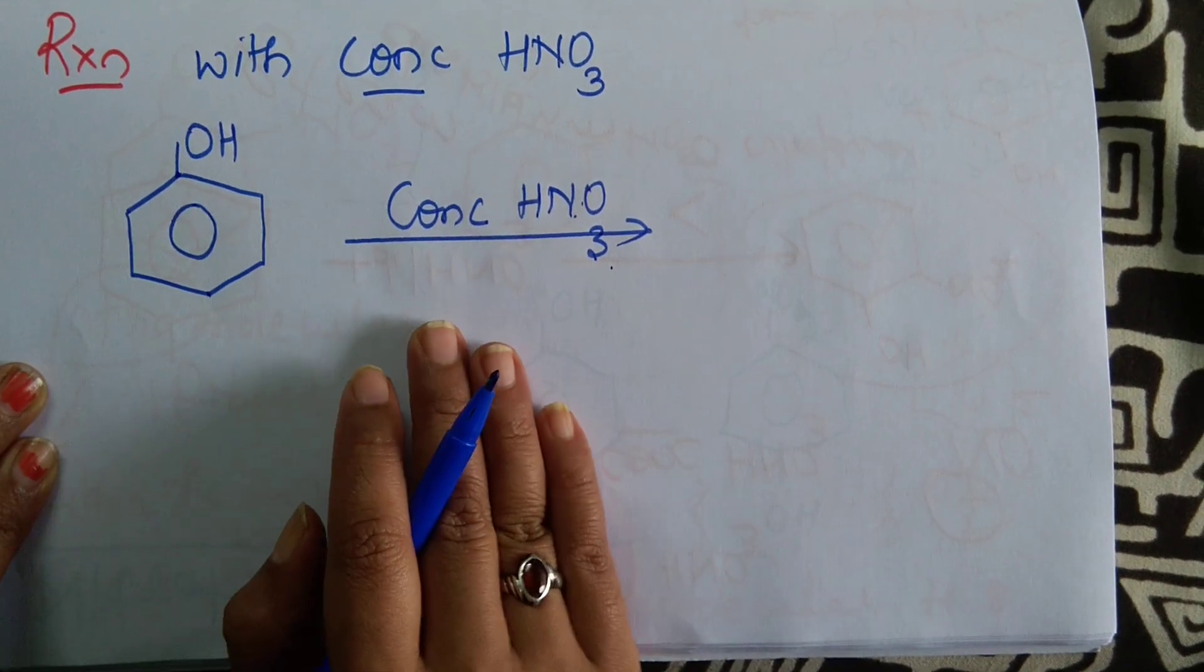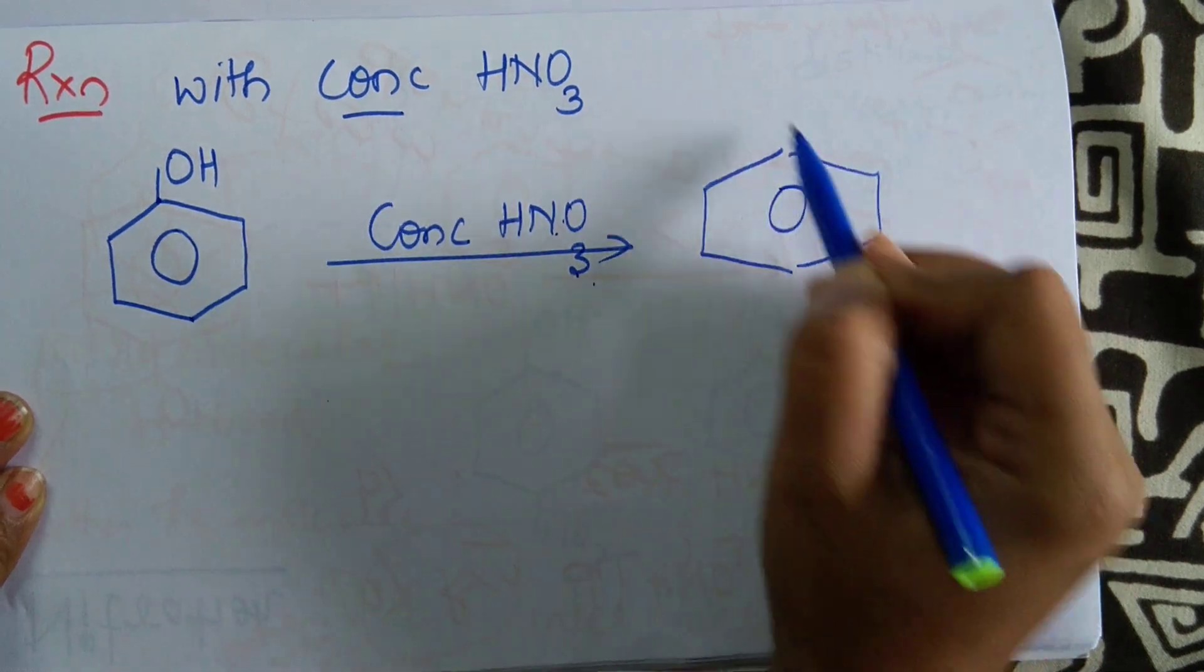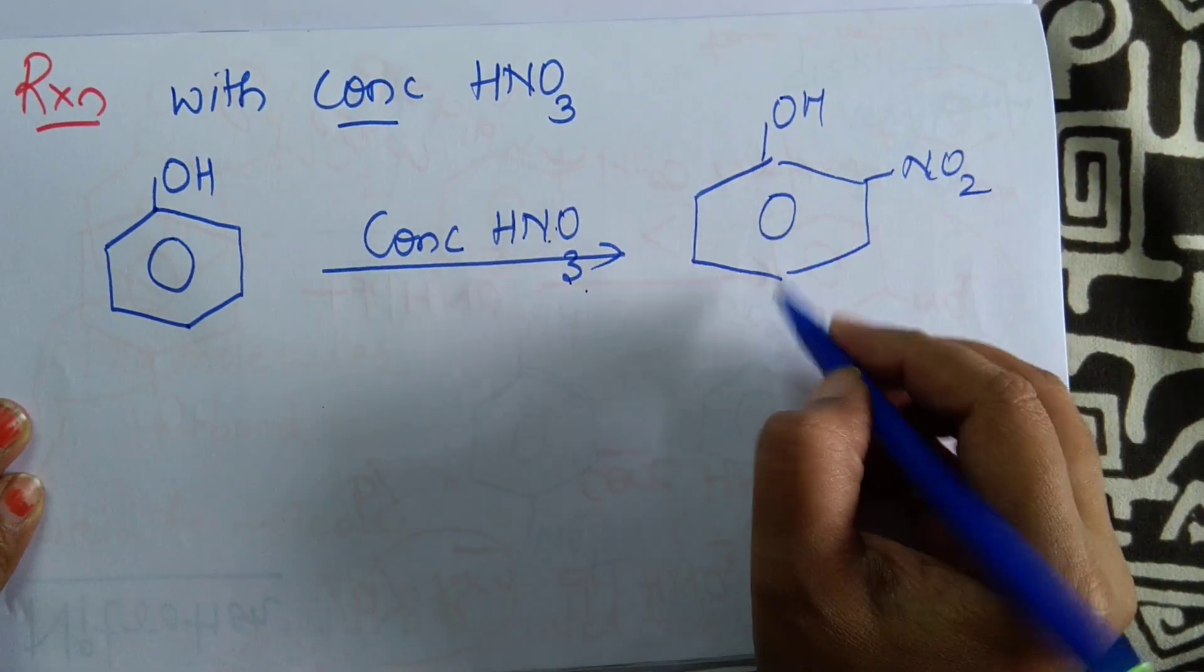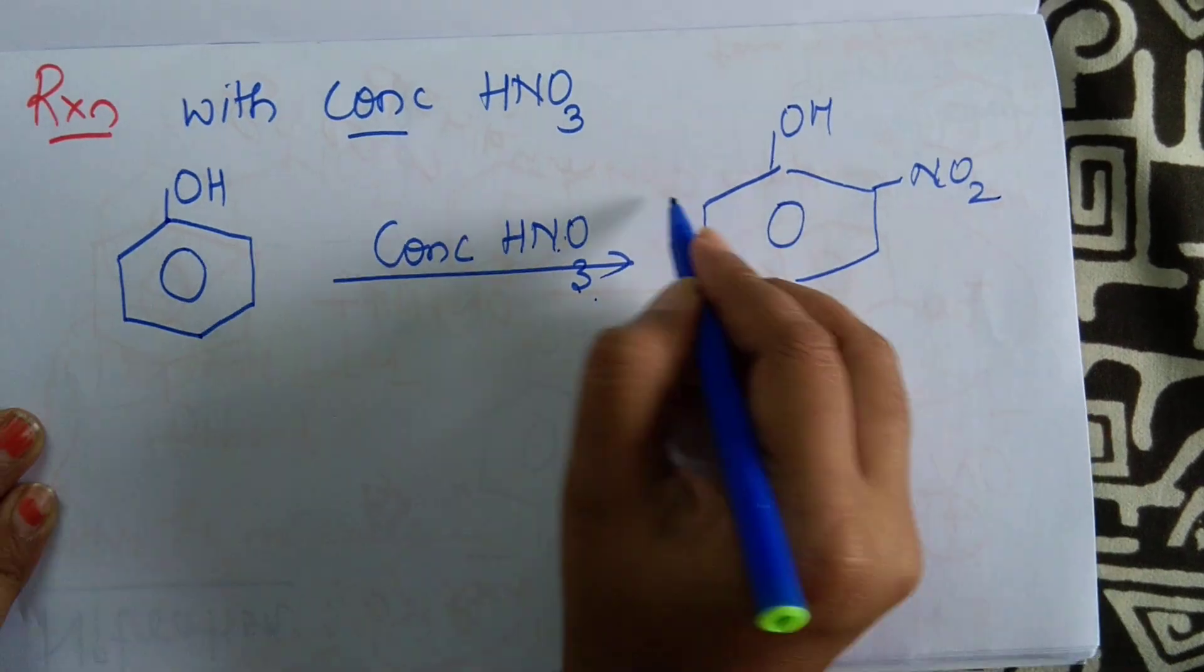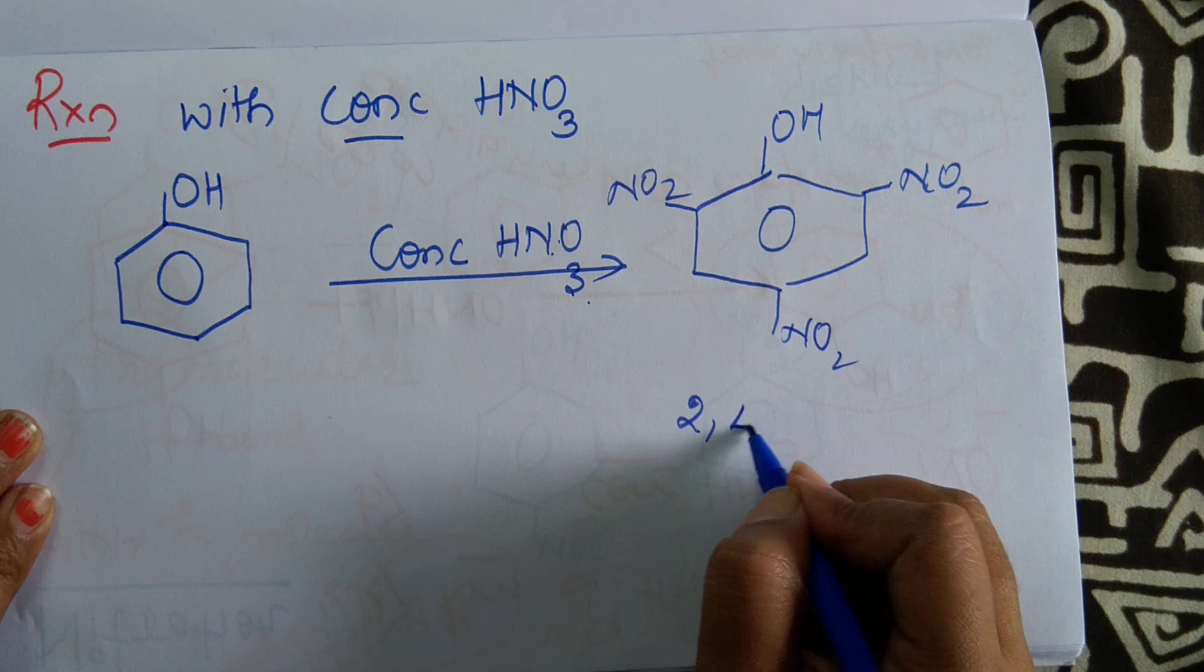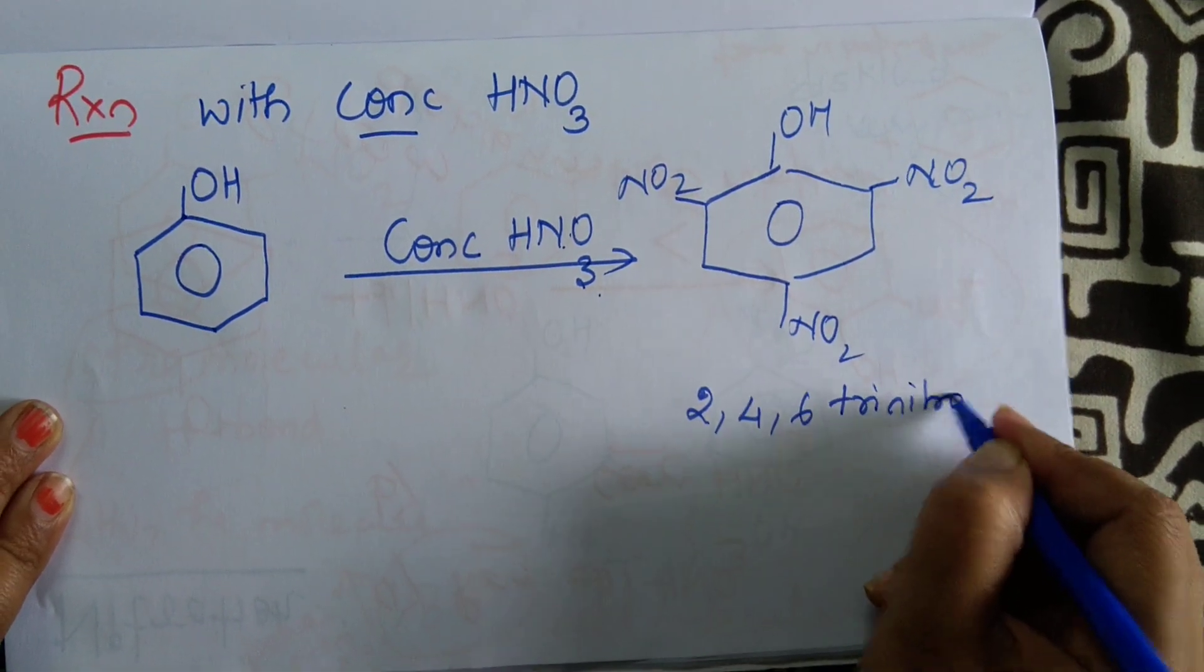Phenol reacts with concentrated nitric acid. At all three positions, NO2 groups attack. So what do we get? 2,4,6 trinitrophenol.